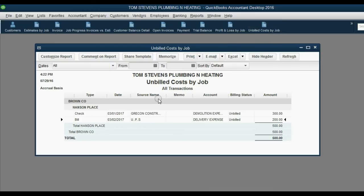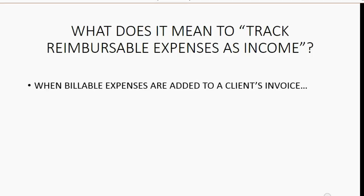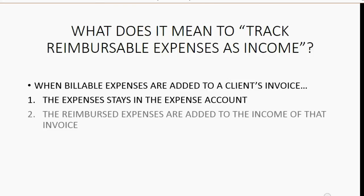When we look at the Unbilled Cost by Job report, we can see that bill is there waiting to be placed on an invoice. The next billing default we will discuss is tracking reimbursable expenses as income. You may ask: what does it mean to track reimbursable expenses as income?